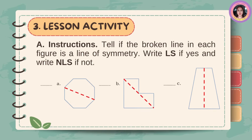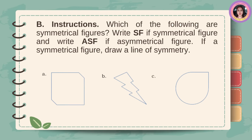Let's have an activity. Letter A — Instructions: tell if the broken line in each figure is a line of symmetry. Write LS if yes, and write NLS if not. Letter B — Instructions: which of the following are symmetrical figures? Write SF if symmetrical figure and ASF if asymmetrical figure. If asymmetrical, draw a line of symmetry.